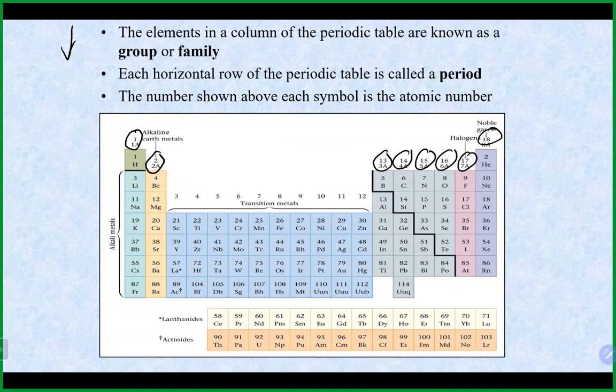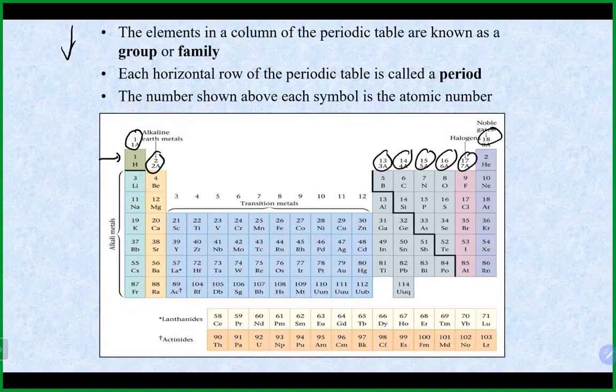Most people don't call it 1A, 2A — just group 1, group 2, group 3, and so forth. Hydrogen is not part of group 1, even though it appears above that column on most periodic tables. Group 1 actually starts with lithium. We'll talk about why hydrogen isn't included in just a bit.